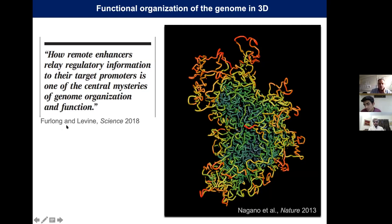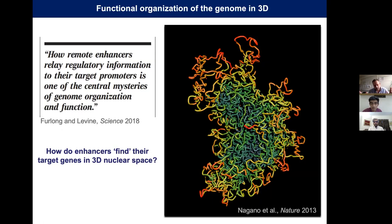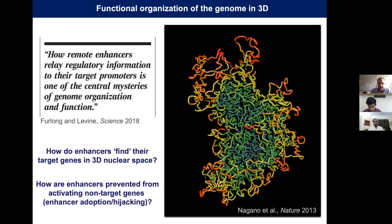Even leaders in the field frame this as two interlinked questions. First: how do enhancers find their target genes in the vast 3D nuclear space? Second: how are enhancers prevented from activating non-target genes? Failure to avoid non-target genes can cause enhancer adoption or enhancer hijacking, which can have severe consequences.